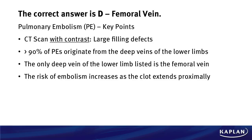Some key points about a PE: we get a CT scan with contrast because that contrast will allow us to see filling defects in the arteries. If we see a filling defect, that means we have some sort of embolus. Greater than 90% of PEs originate from the deep veins of the lower limbs — that's something you must know. That's basic background on what a thrombus is and where it comes from. A PE is simply that thrombus that traveled up into the lungs to cause this patient's presentation.